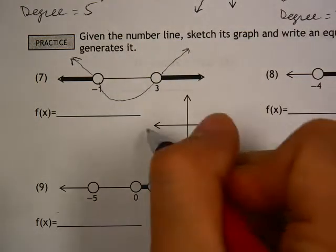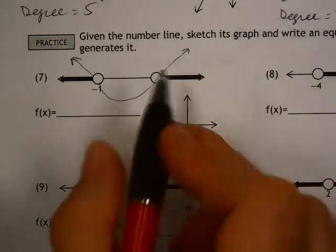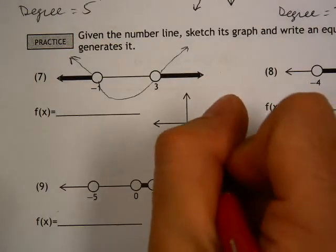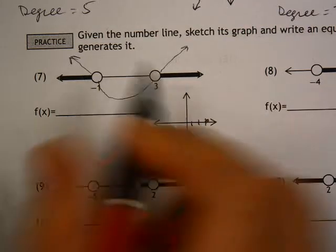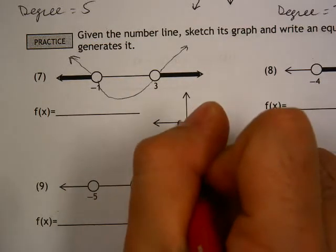And this also gives us an idea of what this sketch is going to look like. Positive 3, there's positive 3 on the x-axis. Negative 1, there's negative 1.